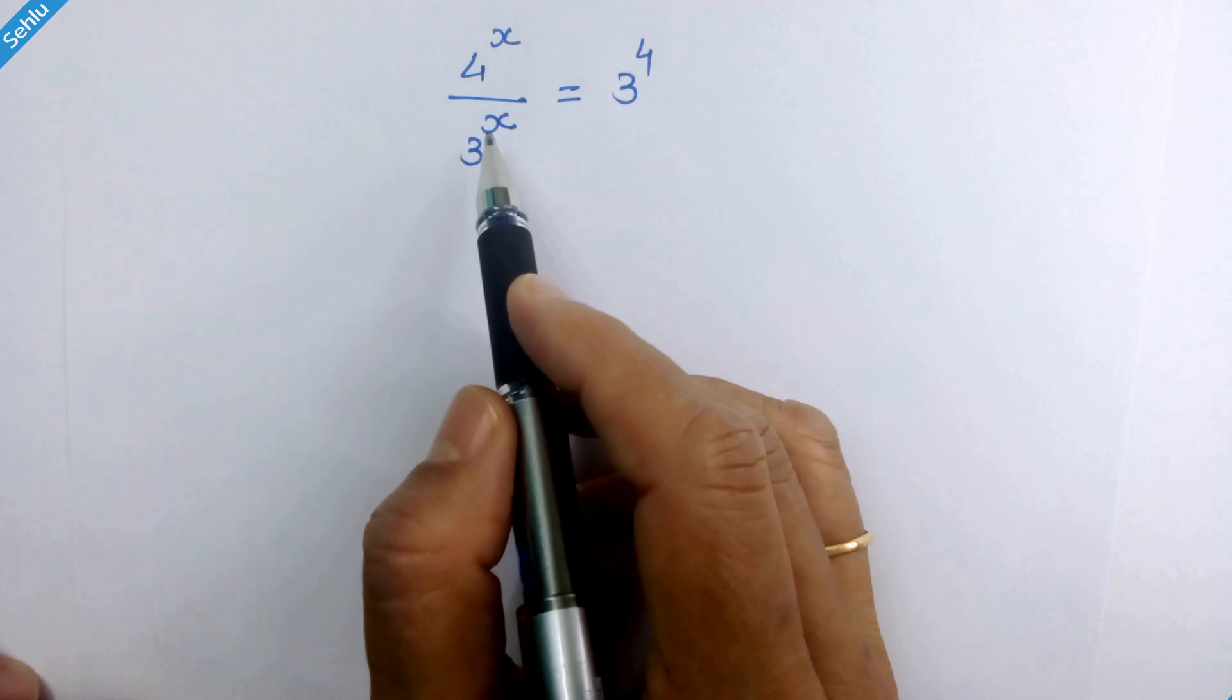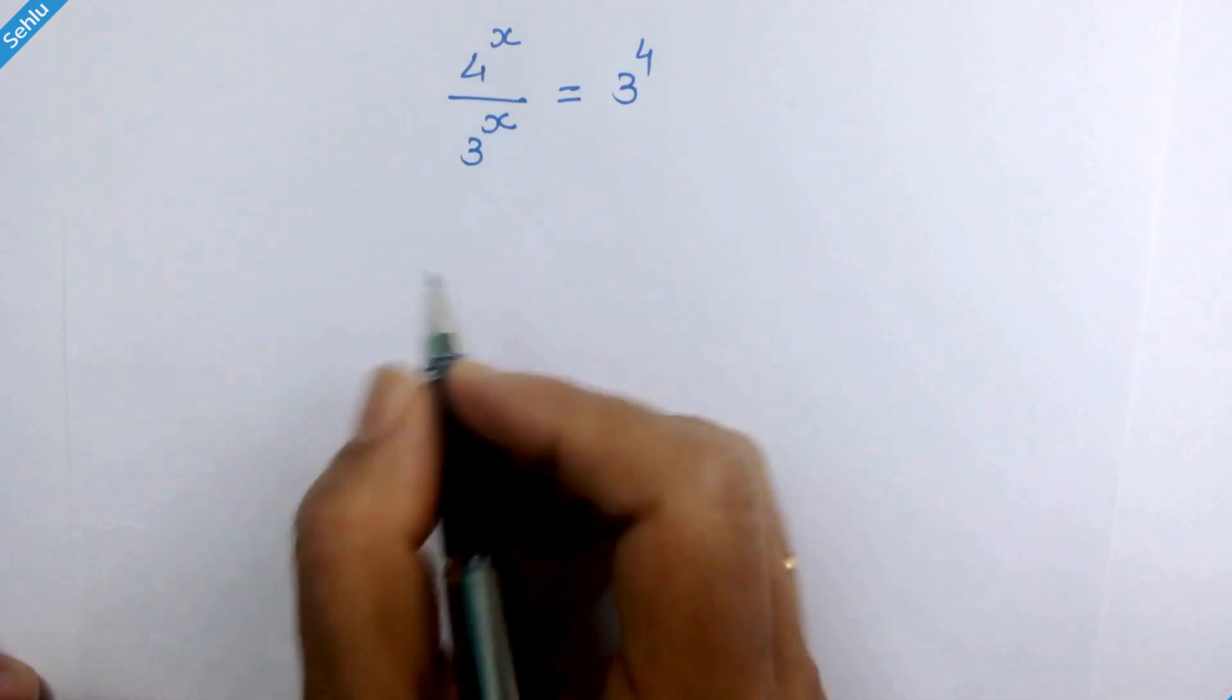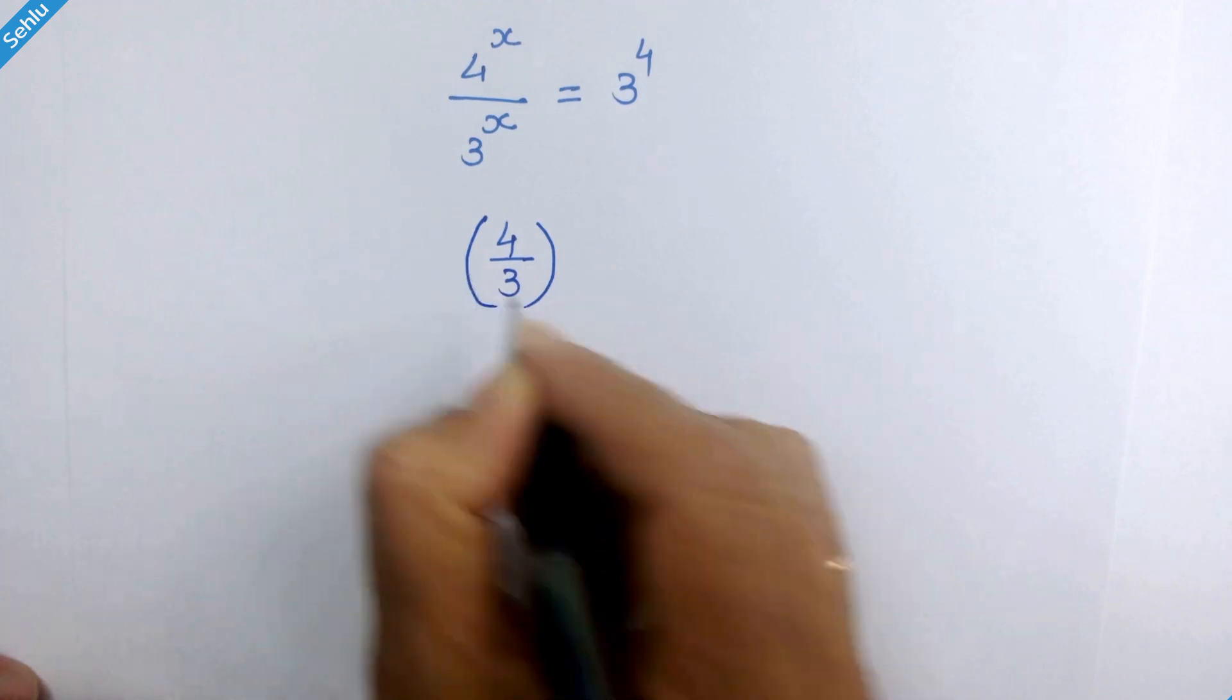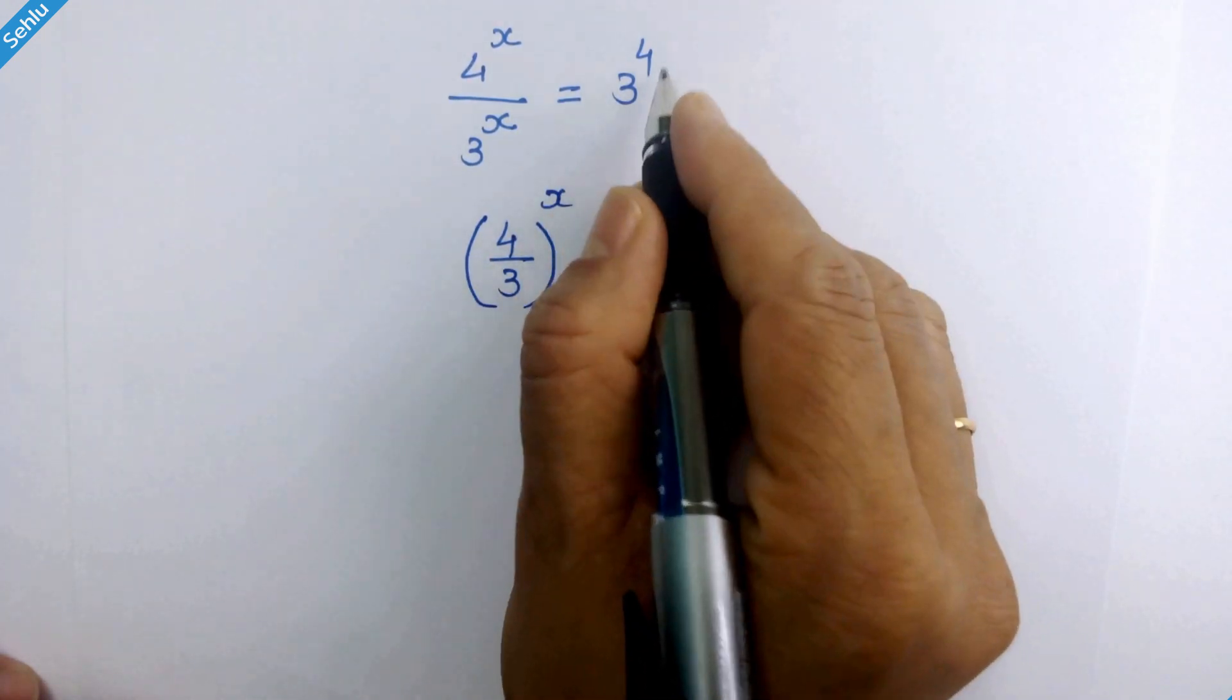Now we can combine these two because they have the same exponent. And 3 raise to 4 is 81.